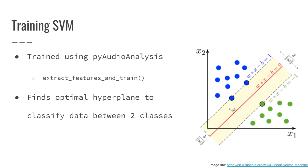We used the sklearn.svm package and trained our model on 90% of our manually labeled data, allowing for testing on 10%. This creates an SVM model based solely on the labeled data from the selected files, as the other files did not contain many speech sections. We operated on both short-term features and mid-term features — short-term features were pulled from 50-millisecond windows with no overlap, and mid-term features were averages across 1.25-second windows, also with no overlap.